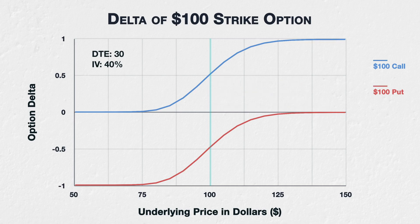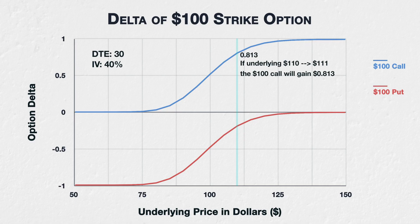Let's jump up quite a bit higher to an underlying price of $110. With the underlying price at $110, the delta of this $100 strike call option is about 0.813. The 0.813 delta means that if the underlying price increases by $1 to $111, if all else remains equal, we would expect our call option to gain about $0.813 of value. For that $1 of underlying price movement between $110 and $111, this is an equivalent profit to if we had initially bought $81.30 worth of the underlying asset instead of the call option.